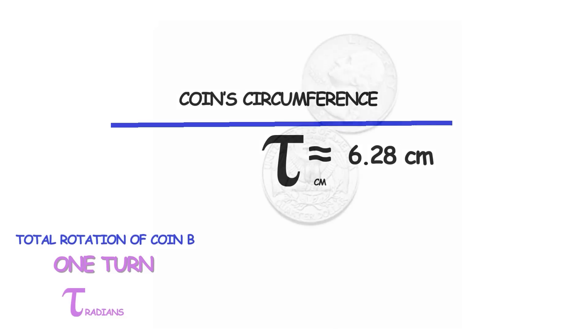And when that point returns to touching the surface, we'll stop rolling. As coin B completes its roll, its center travels a distance equal to the coin's circumference, which is tau centimeters, about 6.28 centimeters. The total rotation of coin B is one turn, or tau radians, if you prefer. Now,